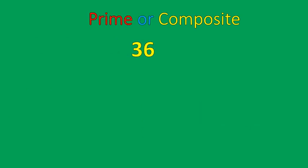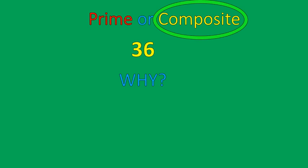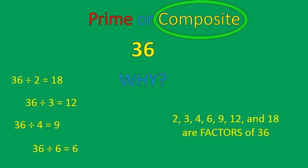So let's play a quick game: prime versus composite. Thirty-six — is it prime or composite? It's composite. Why is thirty-six composite? Because thirty-six divided by two, thirty-six divided by three, thirty-six divided by four, thirty-six divided by six — two, three, four, six, nine, twelve, and eighteen are all factors of thirty-six. It has lots of factors other than itself and one.